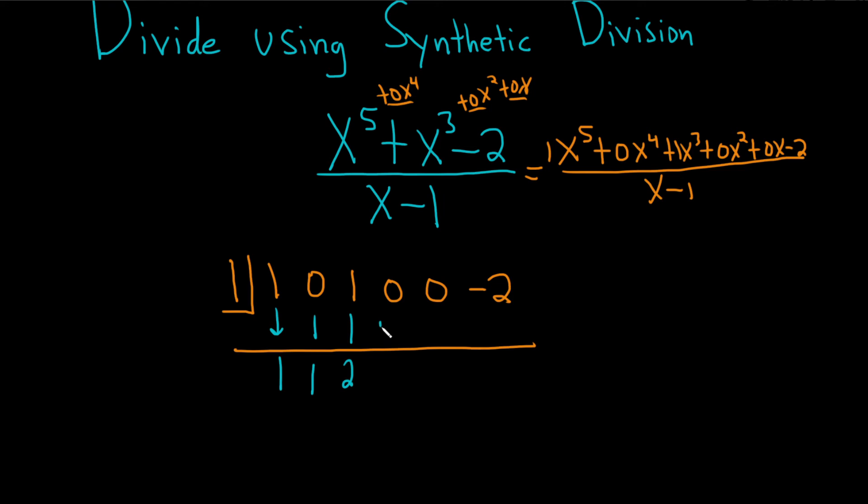2 times 1 is 2. You add and you get 2. 2, 2 times 1 is 2. You add and you get 2. 2 times 1 is 2. You add and you get 0.